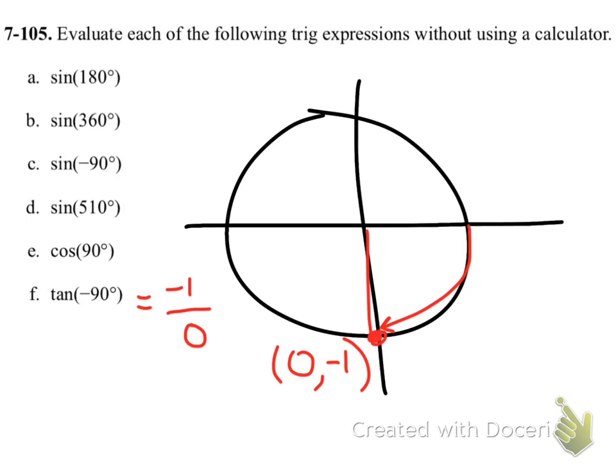So tangent is the ratio of sine divided by cosine. That's the numerator of sine. That's the denominator of cosine. So now when I take a look at this, that cannot happen. You cannot divide by zero. So it is an undefined solution, or there's no solution to that because you cannot divide by zero.